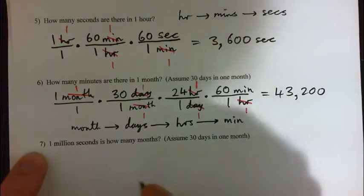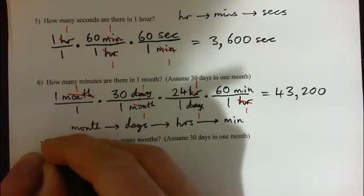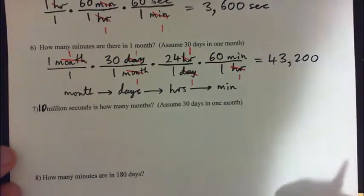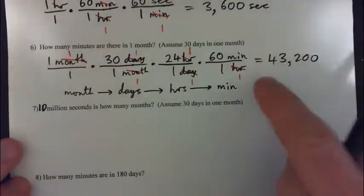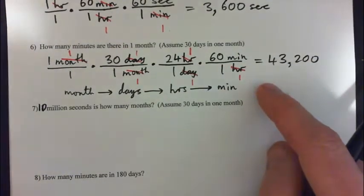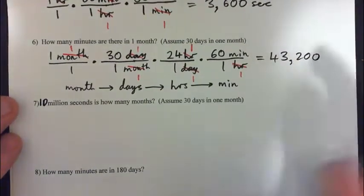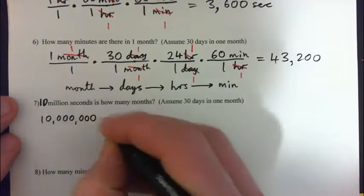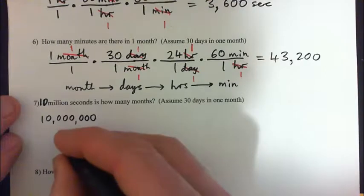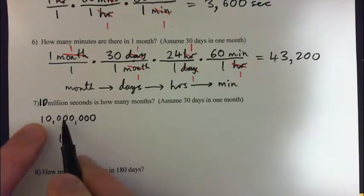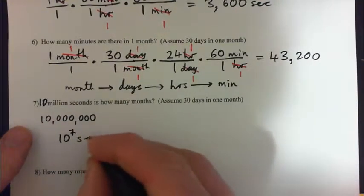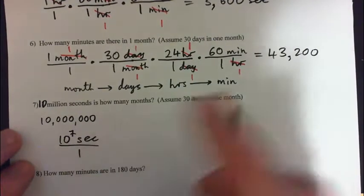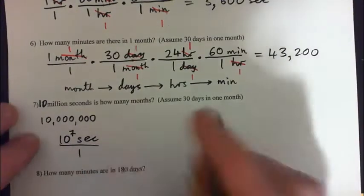On to number 7. I want to change the problem slightly to 10 million seconds, because it gives a nicer answer. So for question 7: 10 million seconds is how many months? Press pause and do the whole thing, then check your answer. Please use the unit factor method — it will be useful in chemistry, nursing, and other science and math courses. Write down 10 million seconds. 10 million is 10 to the power of 7 seconds over 1.